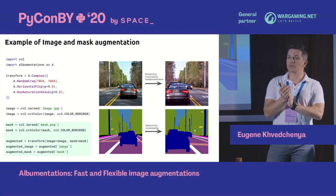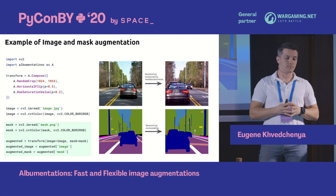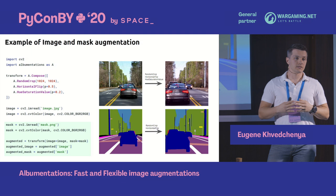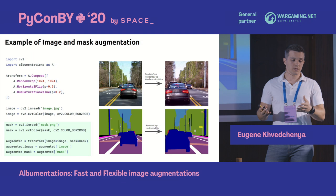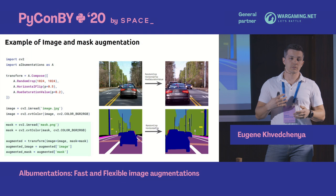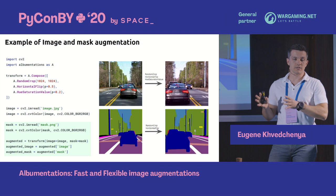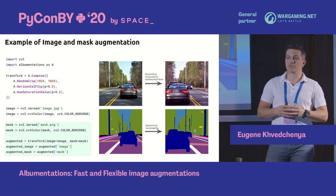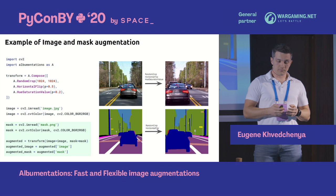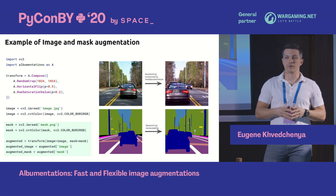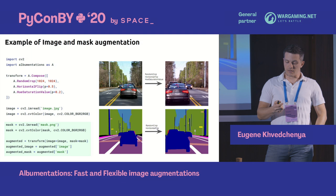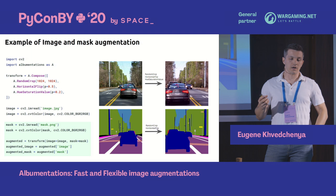A more advanced example is augmenting an image and mask simultaneously for semantic segmentation. The same pipeline doesn't change at all — we only add a second target to the transform function, which is the mask. When transforming a mask, we preserve class labels by applying only spatial transformations with nearest-neighbor interpolation, which keeps labels correct. This ensures that both image and mask after augmentation are consistent, a problem that often occurs when writing augmentations manually.